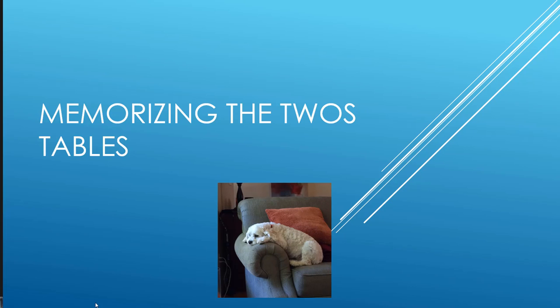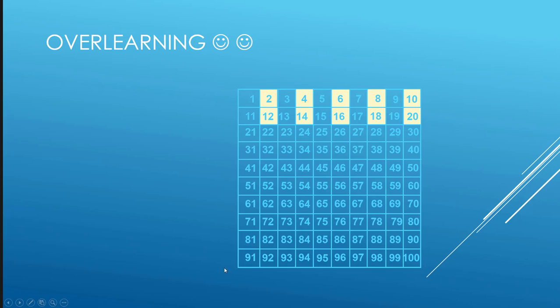Memorizing the twos times tables. We're going to do some overlearning. Maybe you already know some of these. Maybe two times two equals four is something you can say in your sleep. Maybe two times six isn't quite so automatic. Let's practice the twos and then keep on practicing.